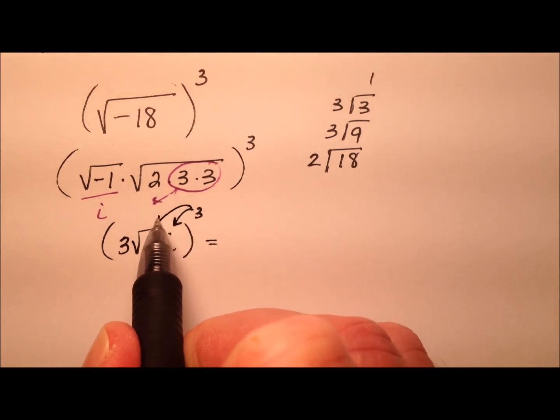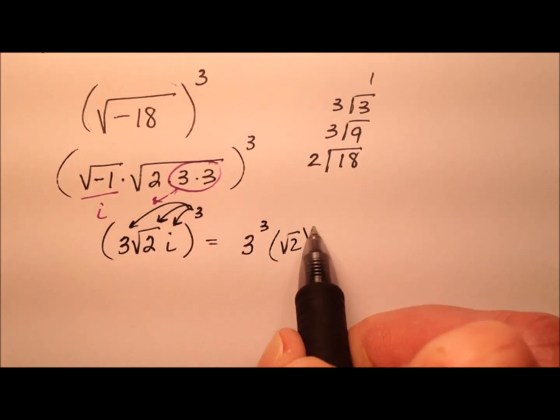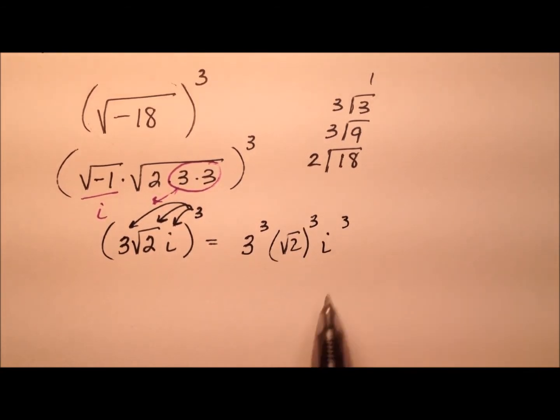So that cubed goes to all of these terms. It's going to be 3 cubed times the square root of 2 cubed times i cubed. Well, 3 cubed is pretty easy. That's 27.